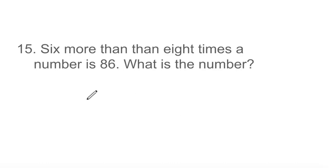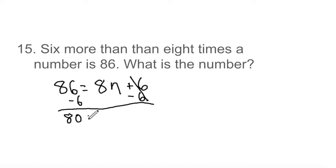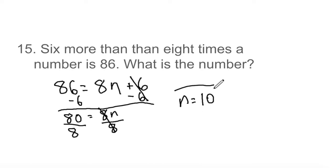Problem 15: 6 more than 8 times a number is 86. Writing this as an equation: 8n plus 6 equals 86. Subtracting 6 from both sides gives 80 equals 8n. Dividing both sides by 8, we get n equals 10.